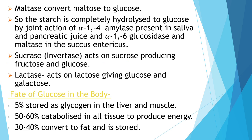Fate of glucose in the body: 5% is stored as glycogen in the liver and muscles; 50 to 60% is catabolized in all tissues to produce energy; and 30 to 40% is converted to fat and stored in the body.